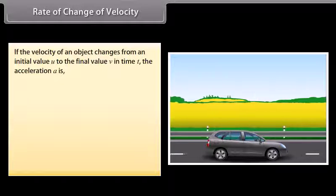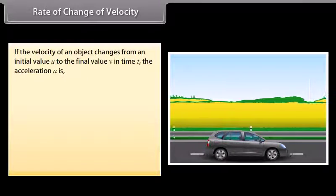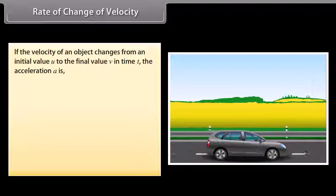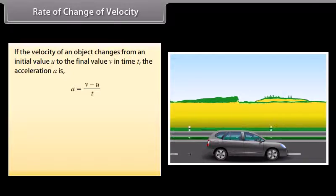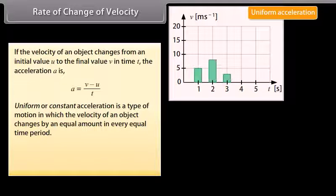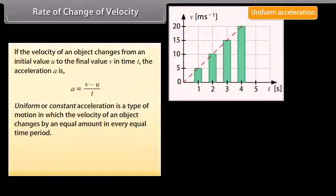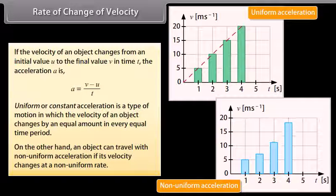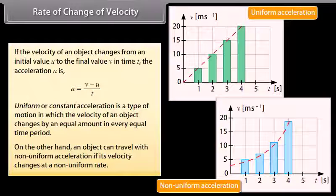If the velocity of an object changes from an initial value U to the final value V in time T, the acceleration A = (V − U) / T. Uniform or constant acceleration is a type of motion in which the velocity of an object changes by an equal amount in every equal time period. On the other hand, an object can travel with non-uniform acceleration if its velocity changes at a non-uniform rate.